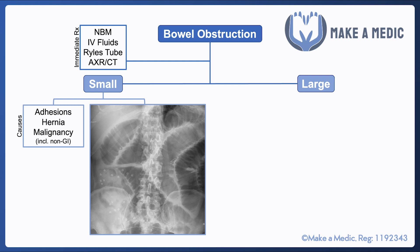The most common cause of small bowel obstruction is adhesions, so it's important to find out whether the patient has previously had any operations on their abdomen. Incarcerated hernias can also cause small bowel obstruction, and malignancy can sometimes cause it too, though that's less common. An important point is that you can get non-GI causes of bowel obstruction — for example, a malignancy in the pelvis such as an ovarian malignancy, or a very large lymph node, can cause an extrinsic mechanical obstruction of the GI tract.